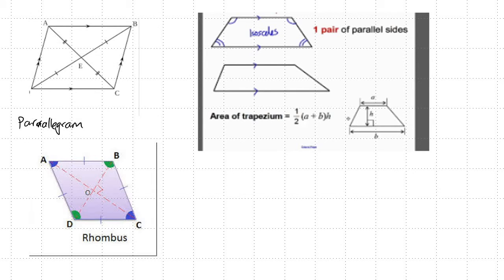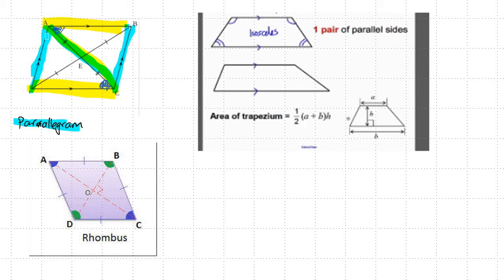First, the parallelogram. What is so special about this? You have to know that there are two pairs of parallel lines — this is parallel to this, and this is parallel to this. Because of these parallel lines, the Z-angles apply: this angle is equal to this angle. Likewise for the other pair of parallel lines — this angle is equal to this angle. You can find all the Z-angles. The angles that are diagonally opposite are also equal: this angle equals this angle, and this angle equals this angle.